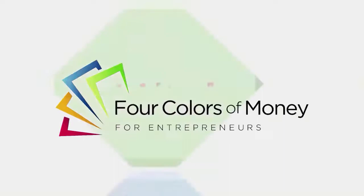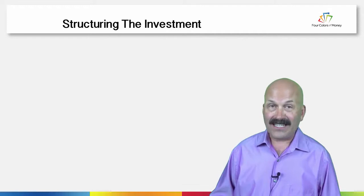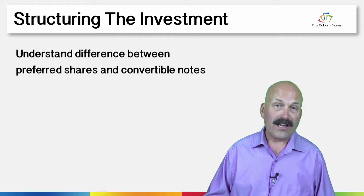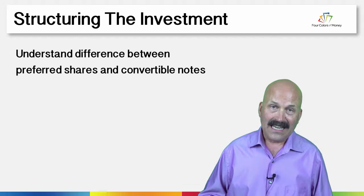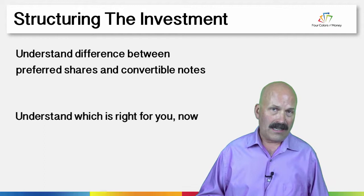Hi, this is Don Gooding with the Four Colors of Money for Entrepreneurs. In this video I'm going to talk about structuring the investment in your company. The objective of this session is to help you understand the basic differences between preferred shares and convertible notes, and most importantly, to help you understand which of these investment structures is right for your company right now.